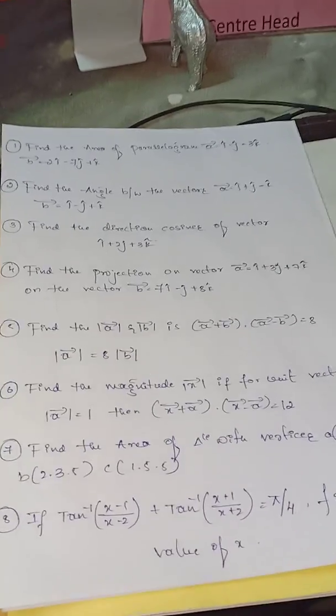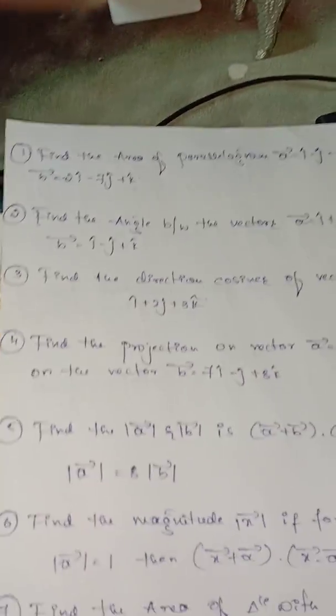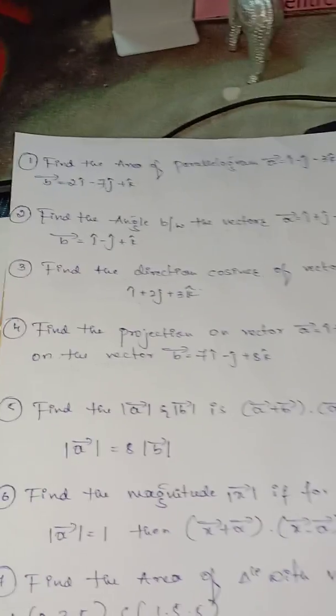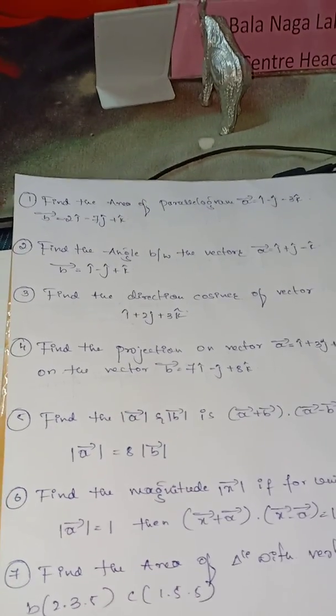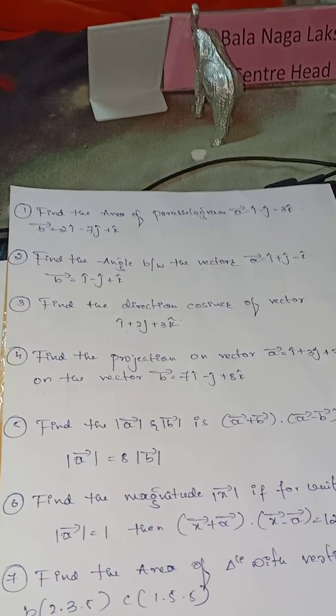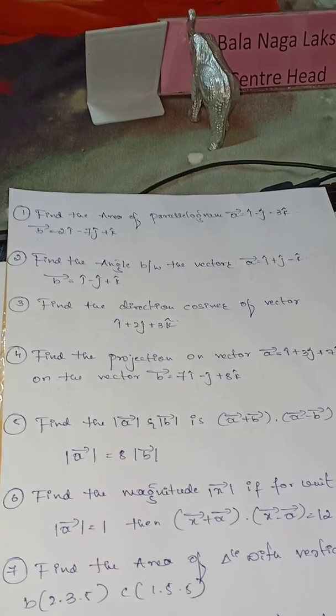So now we discuss what are the important questions we need to see in vector algebra chapter. Find the area of parallelogram, a bar and b bar is given, vector a, vector b. Or find the angle between the 2 vectors. Find the direction cosines of the 2 vectors, it is a 1 mark.